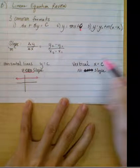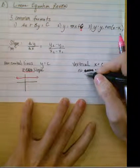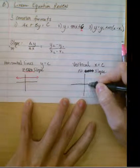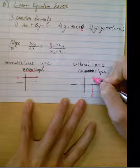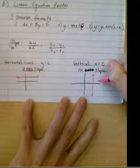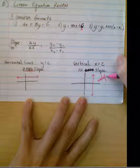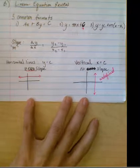A vertical line is x equals C. So if I was going to look at x equals 3, I might be looking at something like this. And this has no slope because it's not a function. This is called undefined. So watch out for things like that on standardized tests.